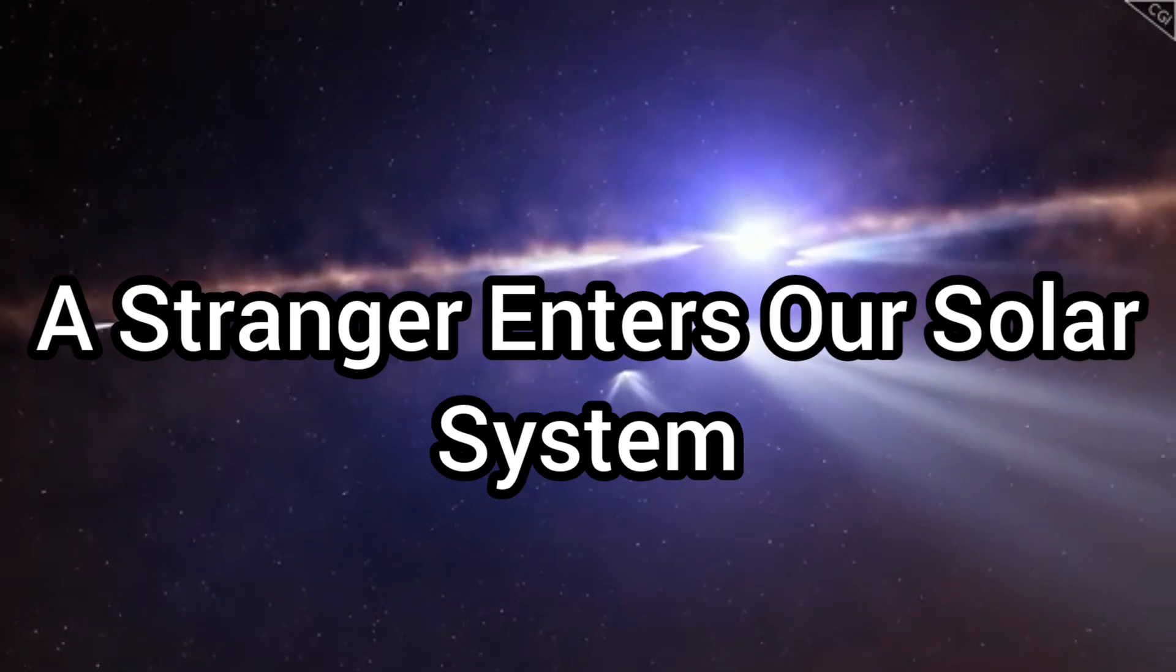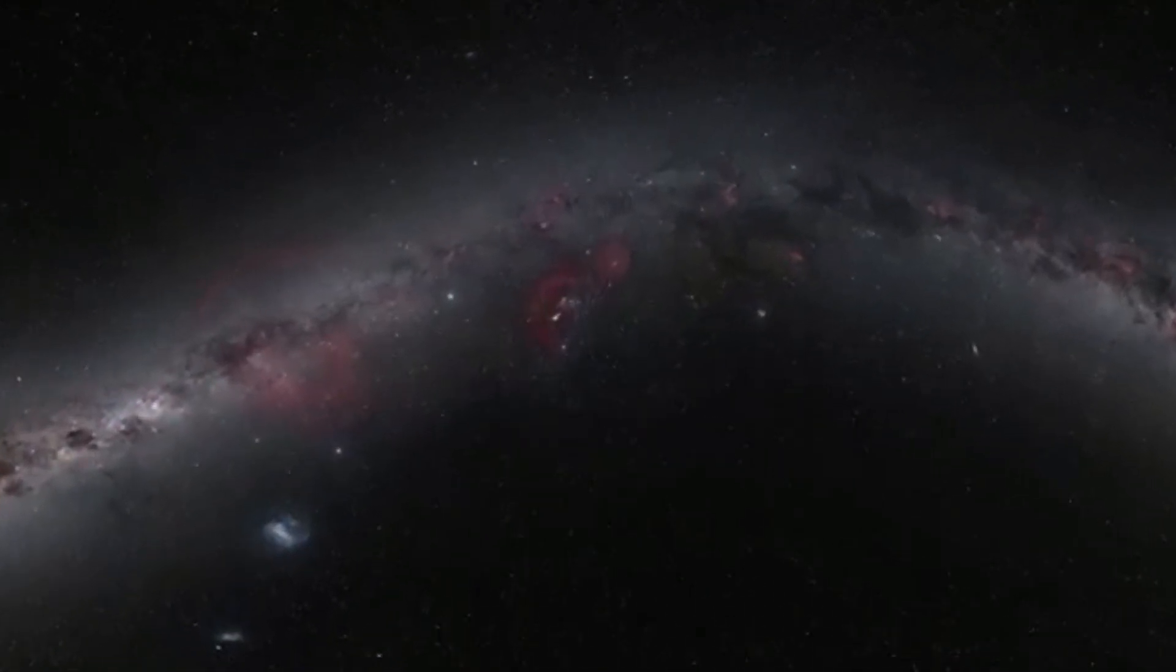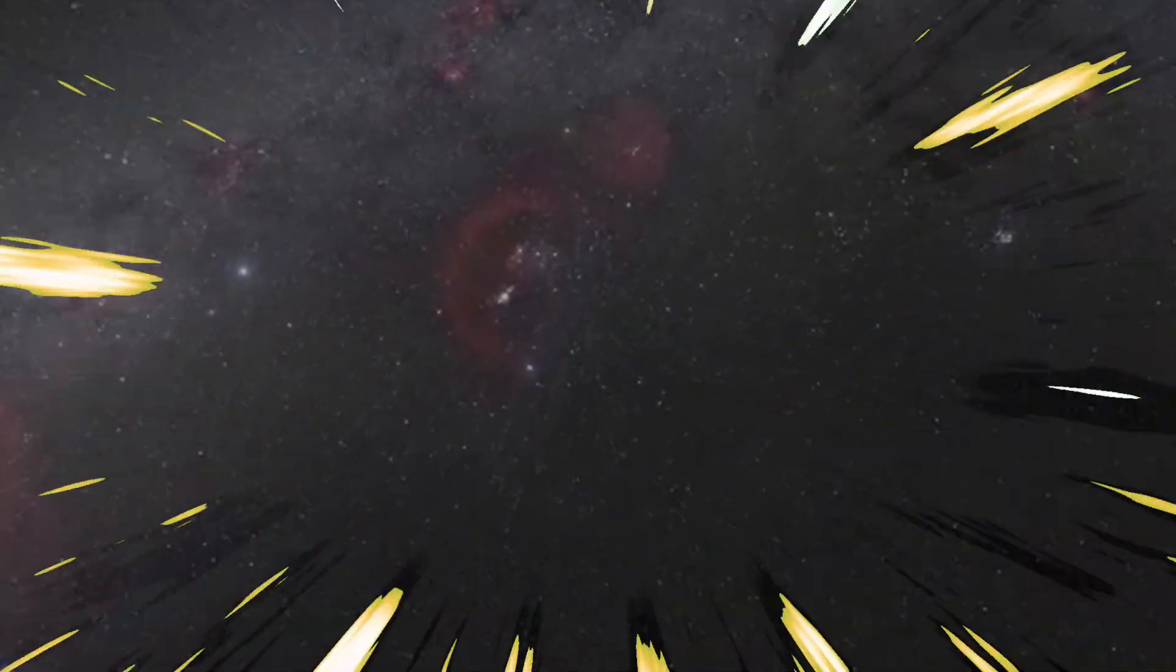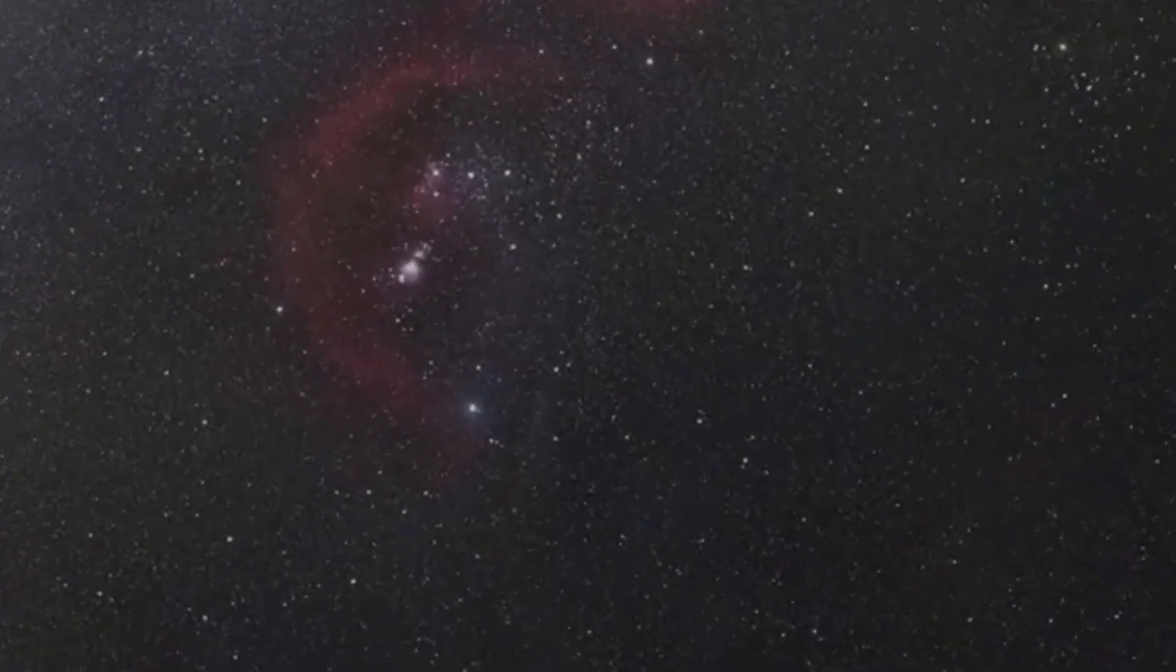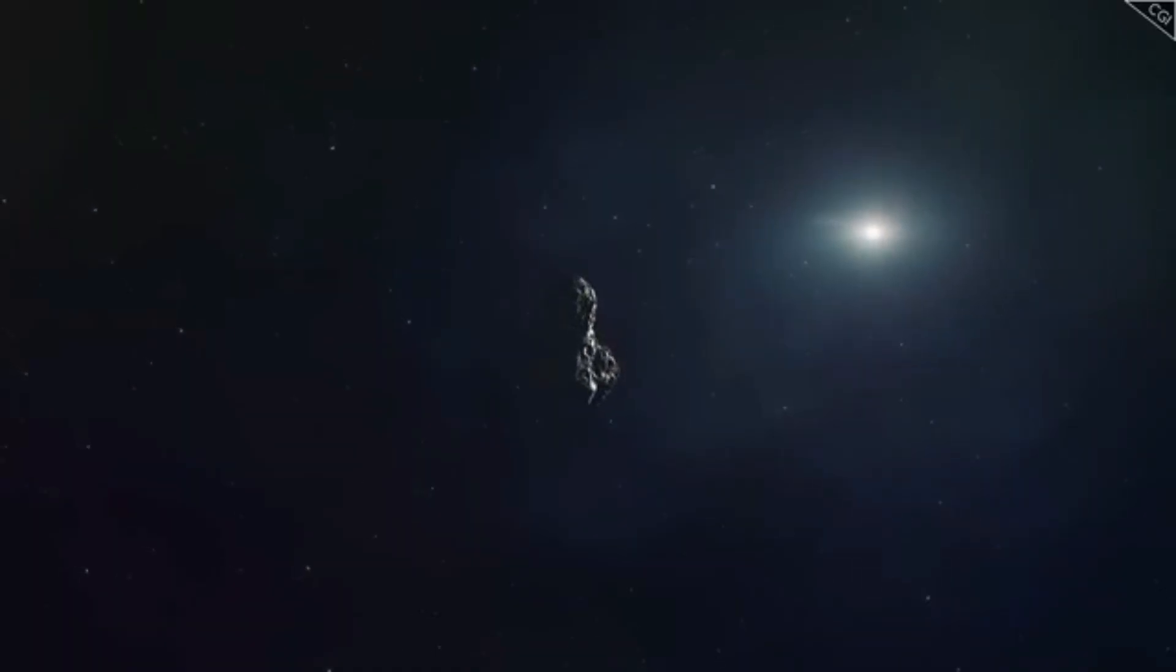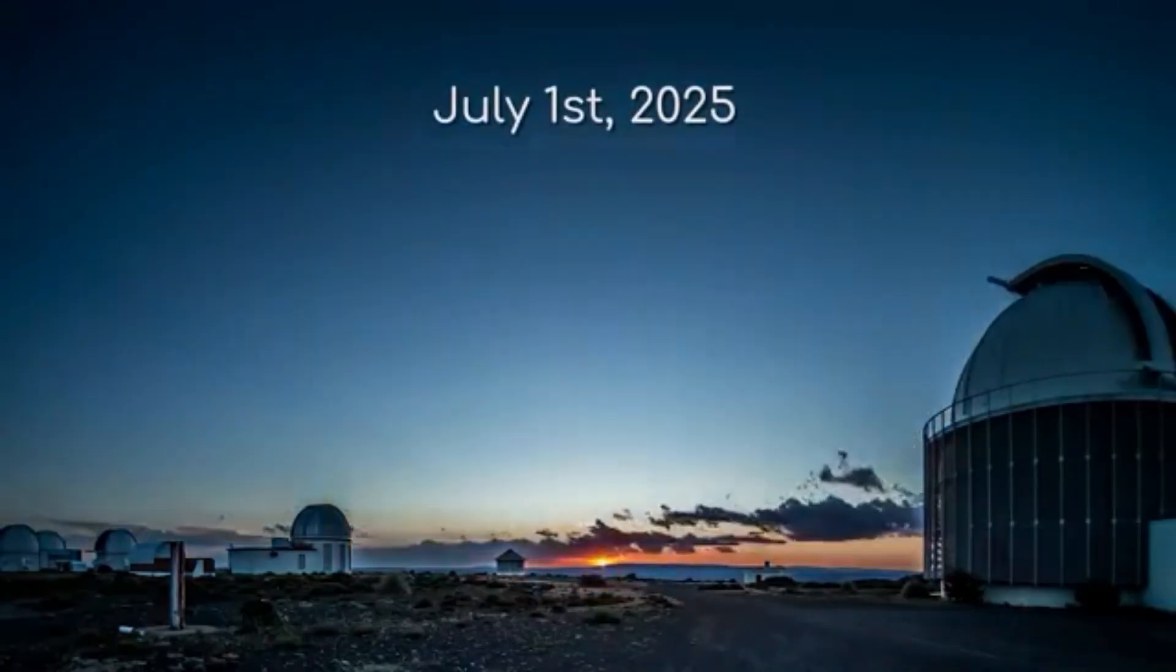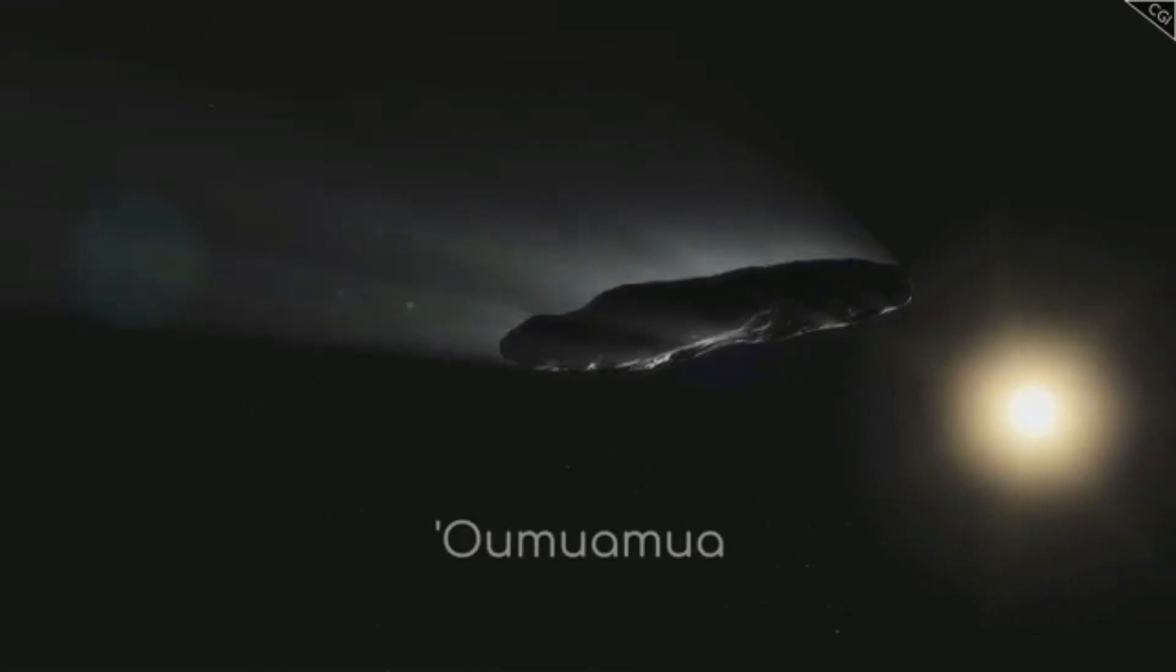Atlas was first spotted as a faint blur streaking through the sky, moving fast around 130,000 miles per hour. That alone tells us something crucial. It's not orbiting the sun. It's just passing through, a cosmic tourist. Its orbital eccentricity is well above 1, meaning it's on a hyperbolic trajectory, a one-time visitor. Only two other such objects have ever been confirmed: Borisov and the infamous Oumuamua.